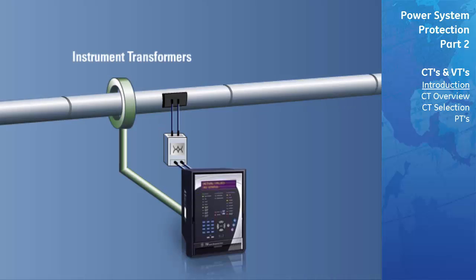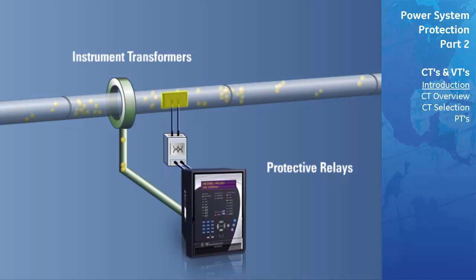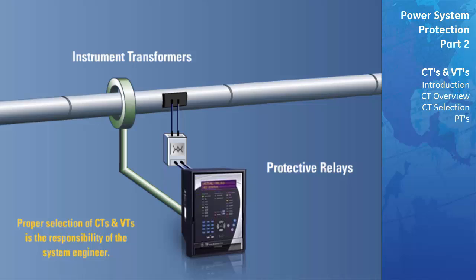Instrument transformers supply protective relays with current and voltage for measurement. This high current and voltage is first converted by the transformers to much lower quantities that can safely be injected into the relay for measurement. It is important to note that the proper selection of current and voltage transformers for protective relaying applications is the responsibility of the system engineer.